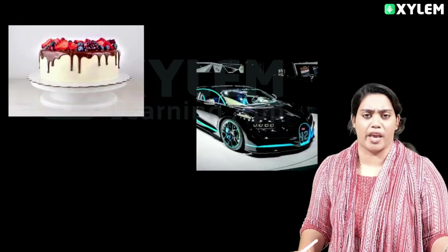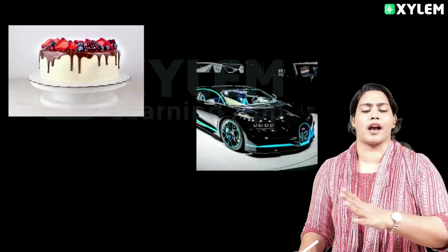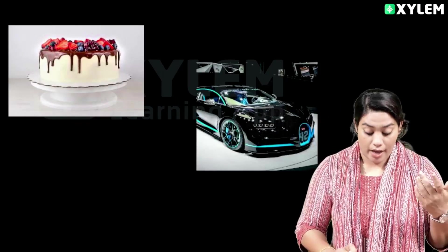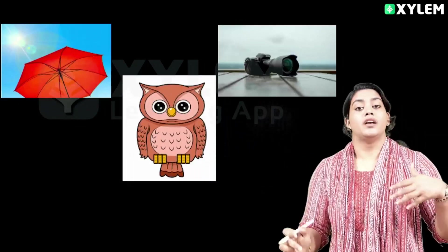A dog, a cake — one cake. A car. We use 'a' before consonant sounds.